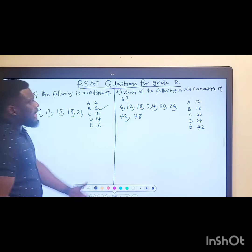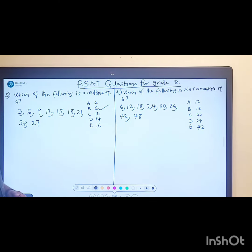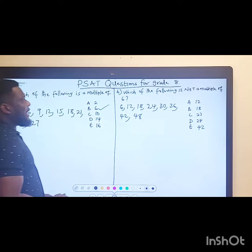Six times eight will give us forty-eight. Now if you look at from the option we have, which of them is not the multiple of six? That is going to be C.